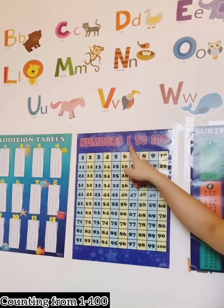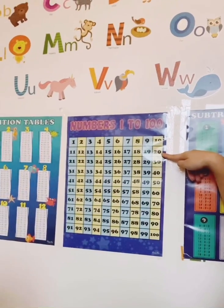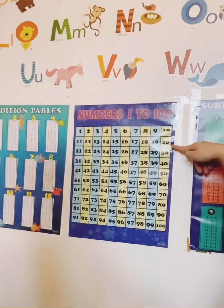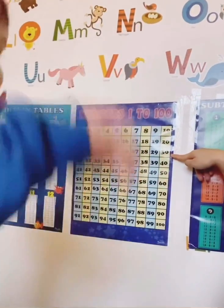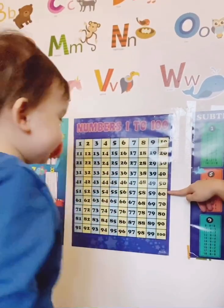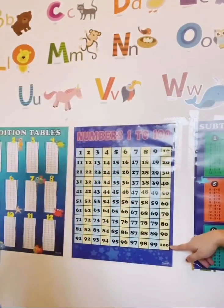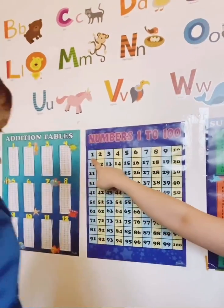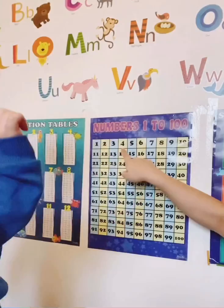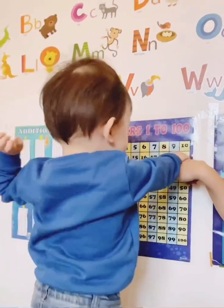First, from one to one hundred. One, zero, thirty, four, five, six, seven, eight, nine, ten.